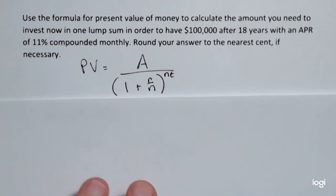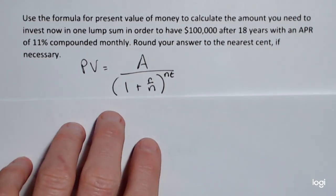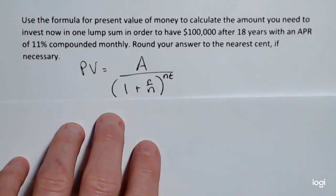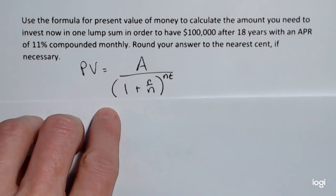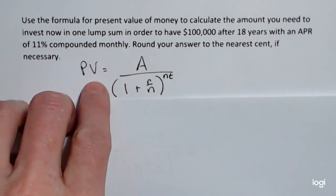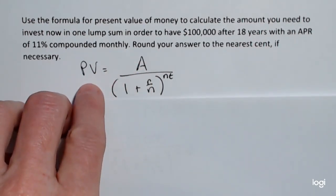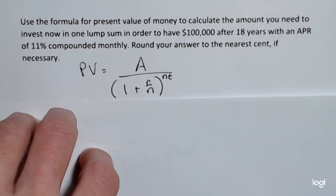This formula for present value is the future value for compound interest resolved for P or the principal. I just denoted the principal, the original amount that you start with, as present value.